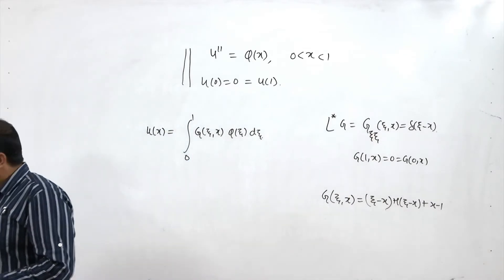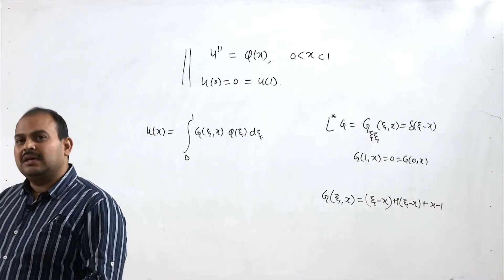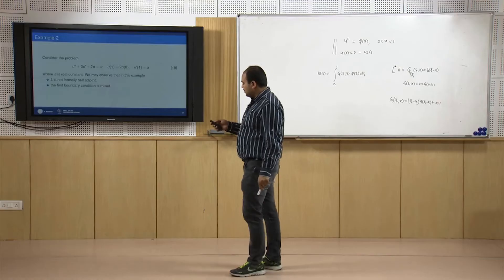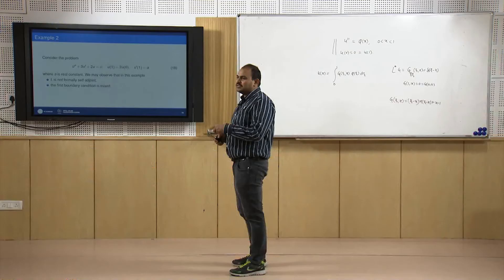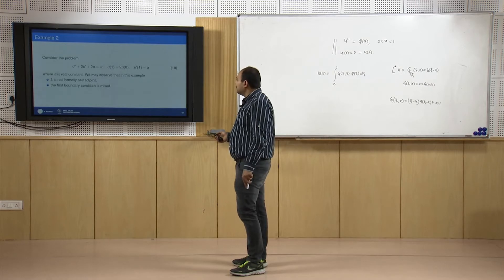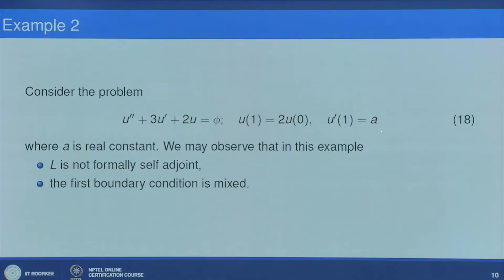Let us now discuss a more complicated problem where direct integration is not straightforward. Consider the second problem: u'' + 3u' + 2u = φ, with boundary conditions u(1) = 2u(0) and u'(1) = A. Here we have non-homogeneous boundary conditions, and the first boundary condition is a mixed condition involving both u(0) and u(1). The operator L is not formally self-adjoint since A = 1, B = 3, and B ≠ A'.